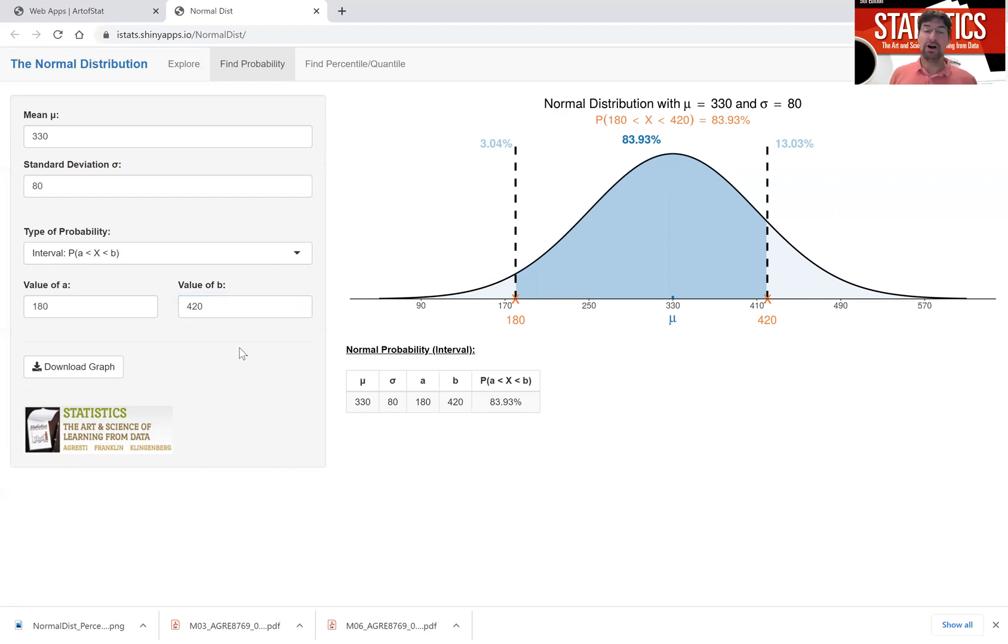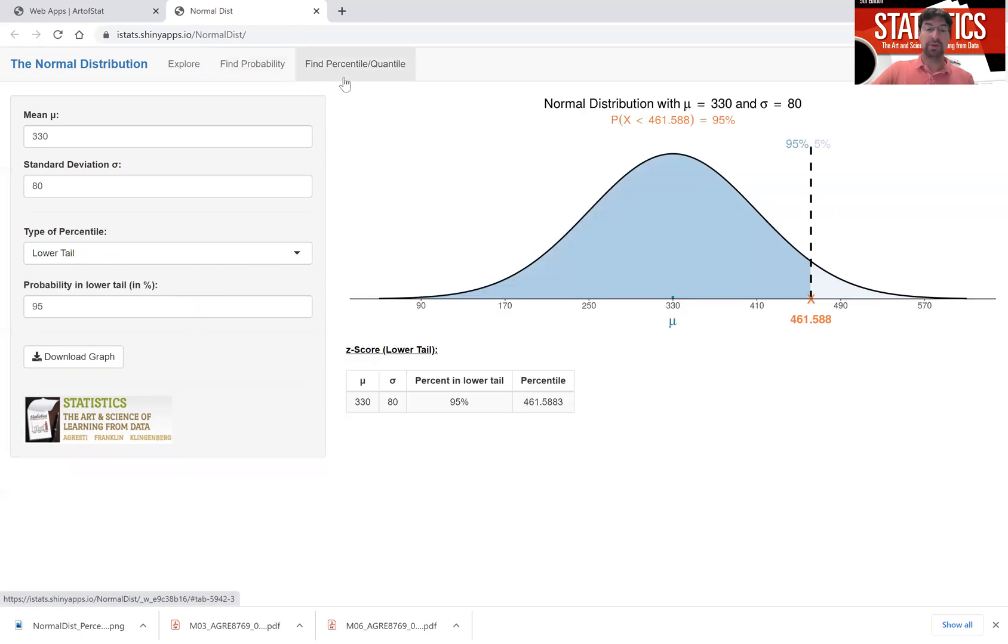I want to know what the talk time of a phone is that is the top 5%. Well, then he's asking for the percentile of the distribution, in particular, the 95th percentile. So to figure out what the 95th percentile is, go to the Find Percentile tab.